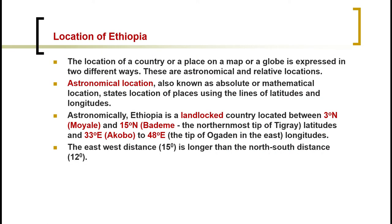Ethiopia is the only landlocked country found in the Horn of Africa. The astronomical or mathematical location of Ethiopia stretches from a latitude of 3 degrees north up to 15 degrees north — from Moyale in the south up to Badme near the northern tip of Tigray — and from the western point around Berbera up to the eastern Ogaden.